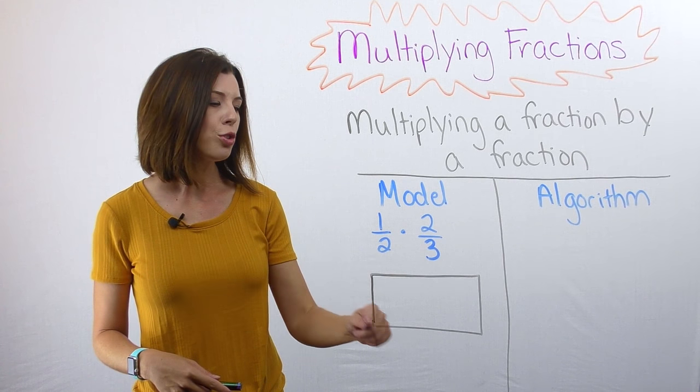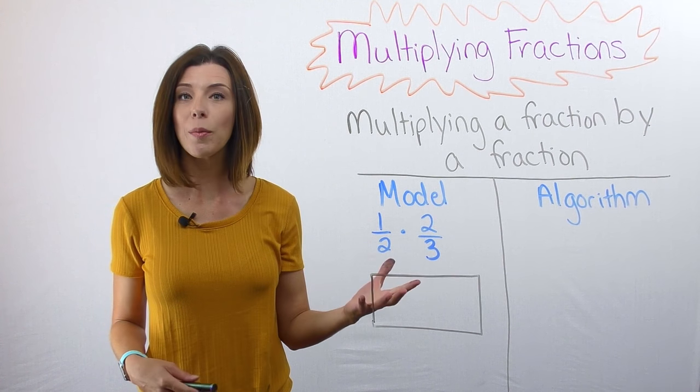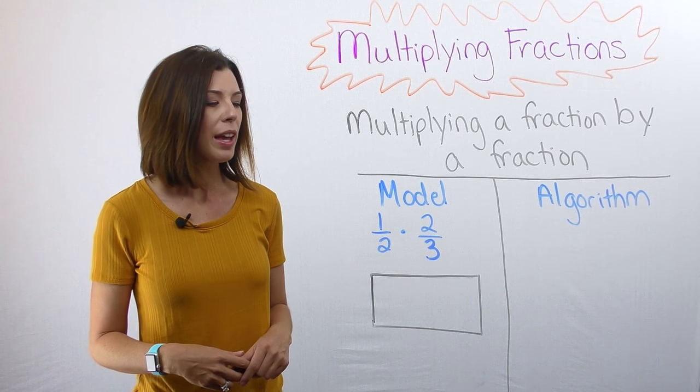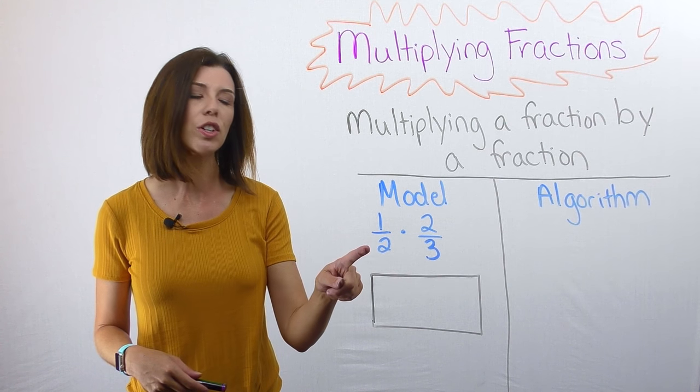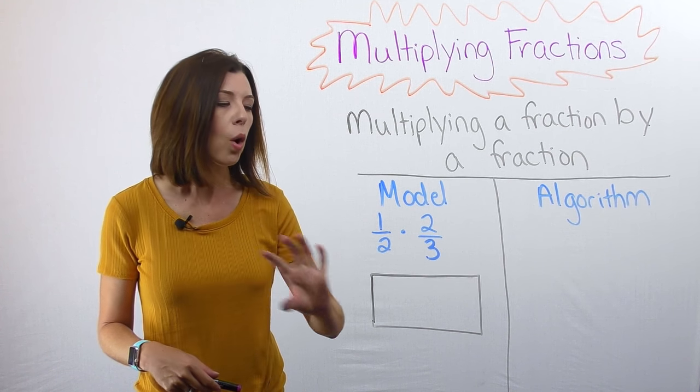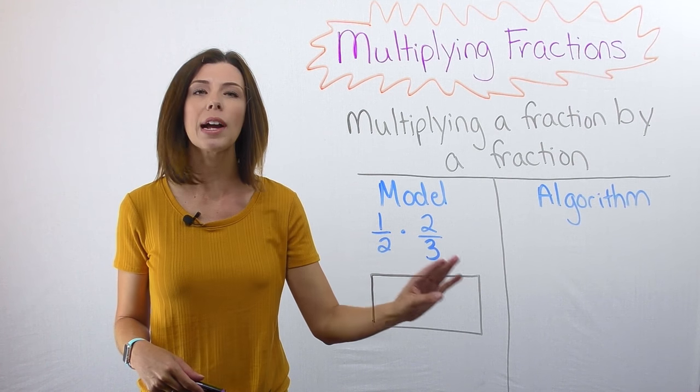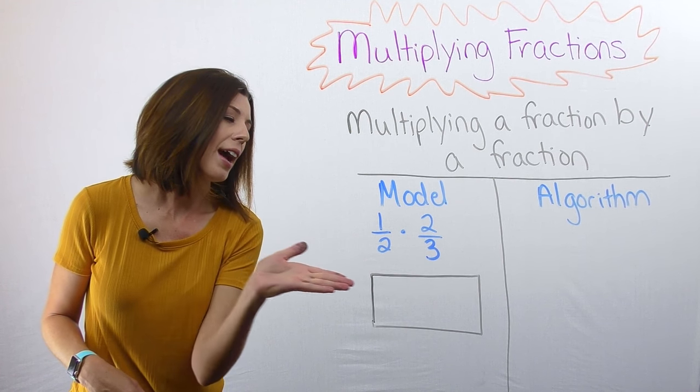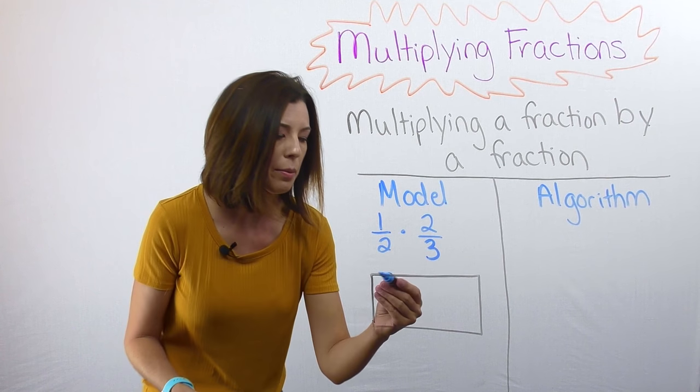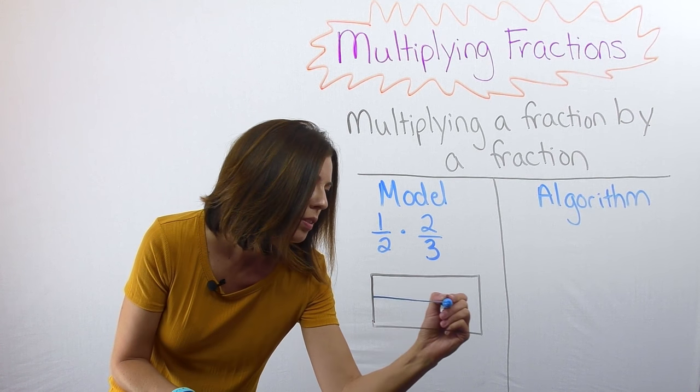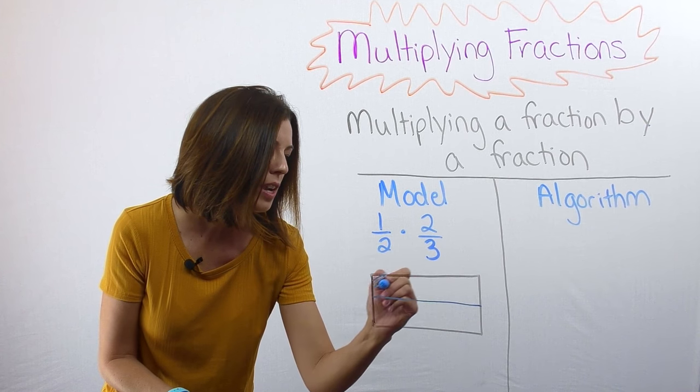You can see that I went ahead and drew a fraction bar so that we can model this situation. The first thing we're going to do is take this first fraction and we're going to model it horizontally. So that means I want you to cut your fraction bar in half this way. I'm going to literally cut it in half and then shade one-half.